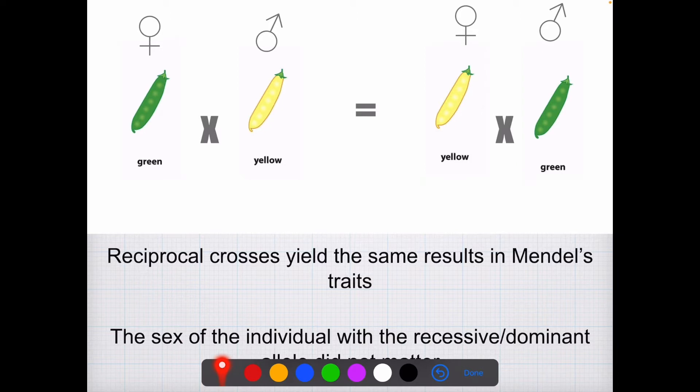And this means that we cannot do reciprocal crosses for these chromosomes. It matters which parent has which trait. So we've said in the past that reciprocal crosses have the same results for traits that follow Mendelian laws.